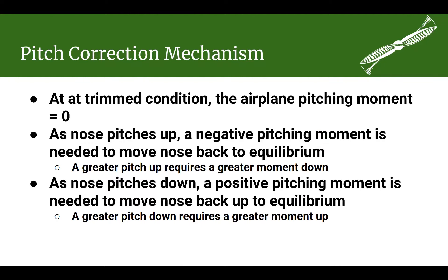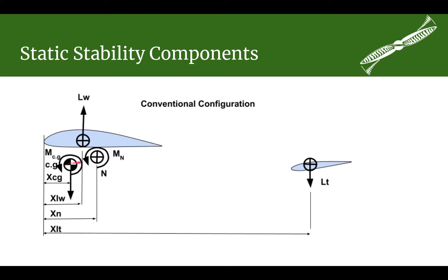Aerodynamically, how do we get that pitching moment? You'll notice we have the CG in front of the aircraft neutral point — that's one of the things needed to have a statically stable airplane. Let's talk about the horizontal tail and its negative angle of attack. We consider the total lift of the airplane to act through the neutral point, pointing up. The center of gravity — the total weight of the airplane — is in front of that, pointing down. That's going to want to rotate the airplane and point the nose down.